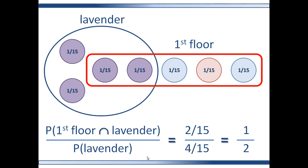Remember that there were 15 total residents and each resident had an equal probability of being sampled. Two of the residents are in the intersection and four of the residents are lavender. So the probability measure of getting a first floor dweller given that you have a lavender is one-half.